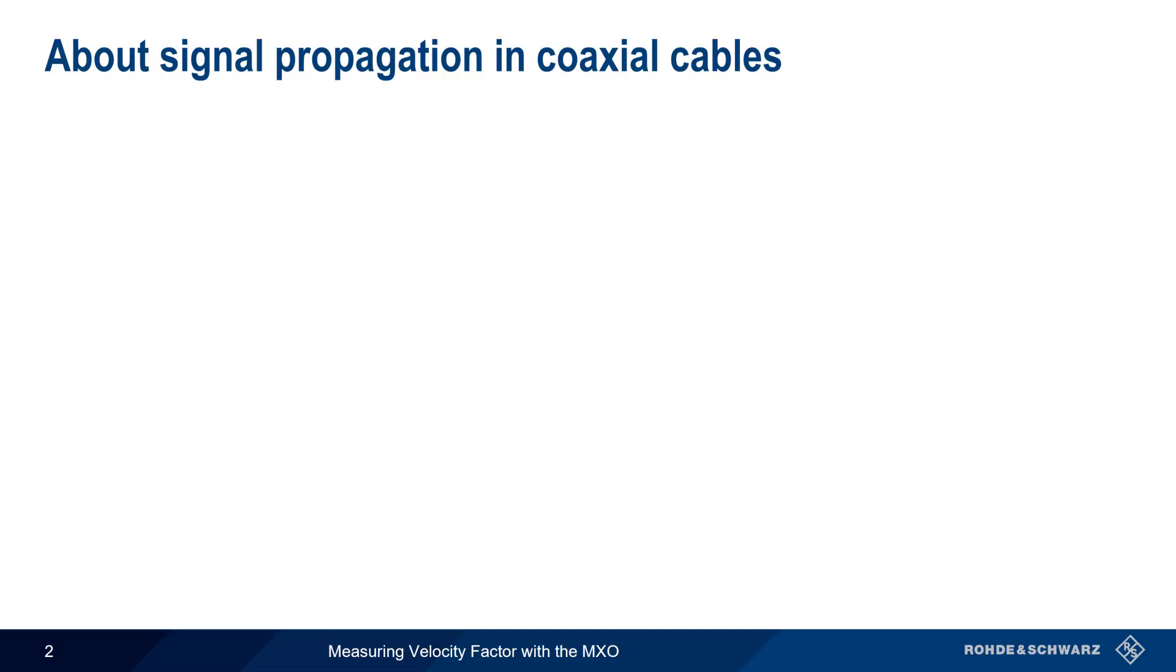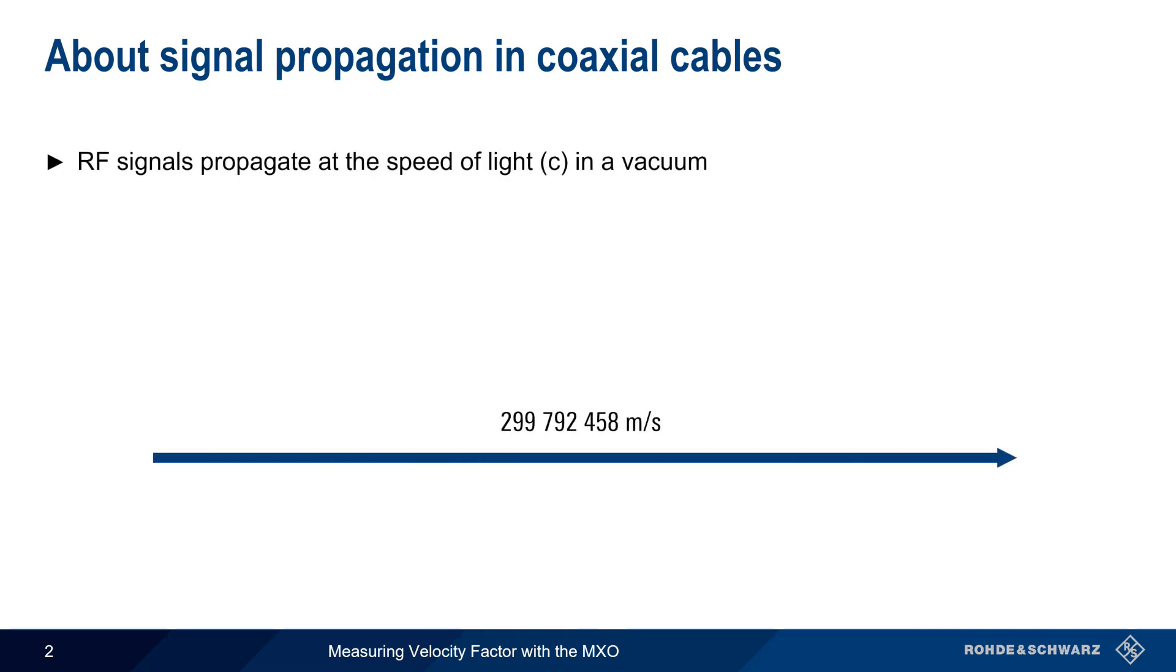Let's start with a brief review of velocity factor. As you should already know, electrical signals propagate at the speed of light in a vacuum. But the speed is reduced when signals travel through matter.